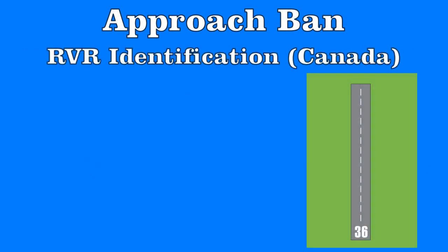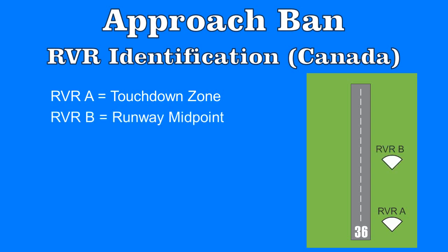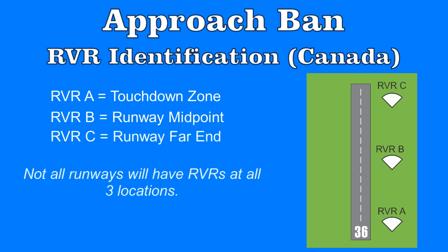Before we discuss the actual limits, please note that in Canada there are three possible RVRs for every runway: RVR Alpha, Bravo, and Charlie. RVR Alpha is the Touchdown Zone RVR, RVR Bravo is the Midpoint RVR, and RVR Charlie is the Far End RVR. Of course, not all runways will have all RVRs available.